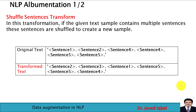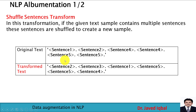The next data augmentation technique is NLP albumentation. In NLP albumentation, we shuffle sentences within a text. For example, if our original text has sentence 1, sentence 2, sentence 4, sentence 4 again, sentence 5, and sentence 5 again, after transformation we shuffle the sentences — placing sentence 2 first, then sentence 3, sentence 1, sentence 5, sentence 5 again, and sentence 4. In this transformation, if the text contains multiple sentences, they are shuffled to create a new sample.